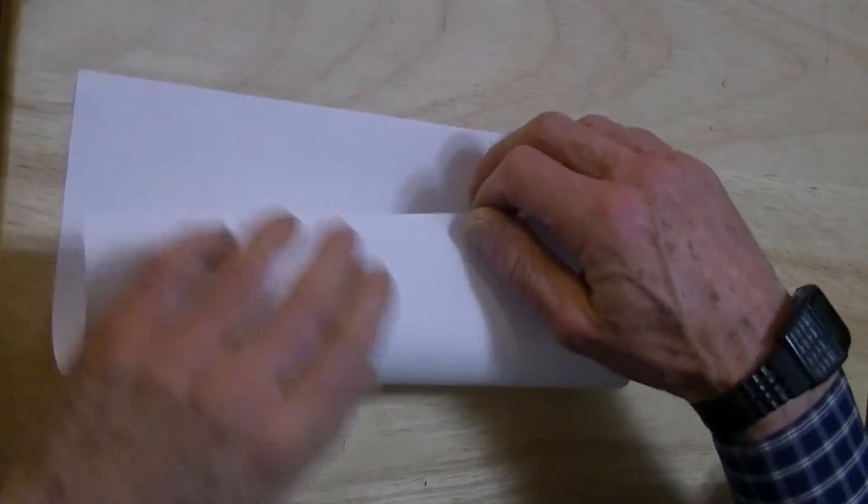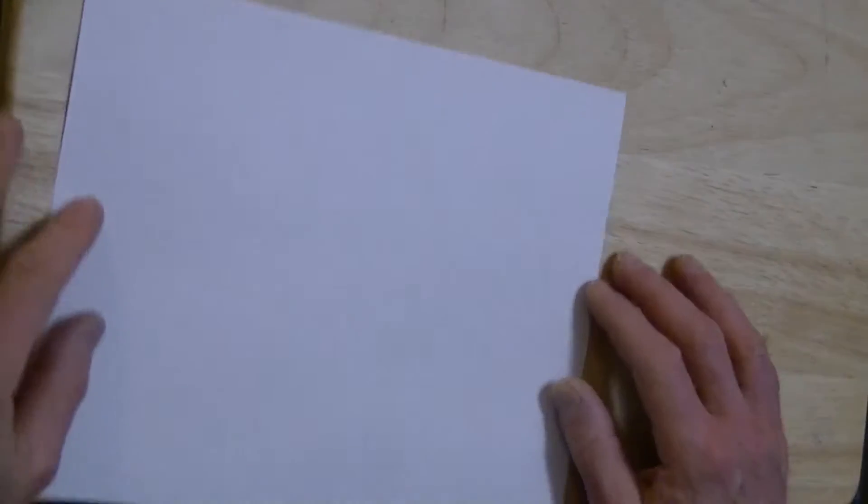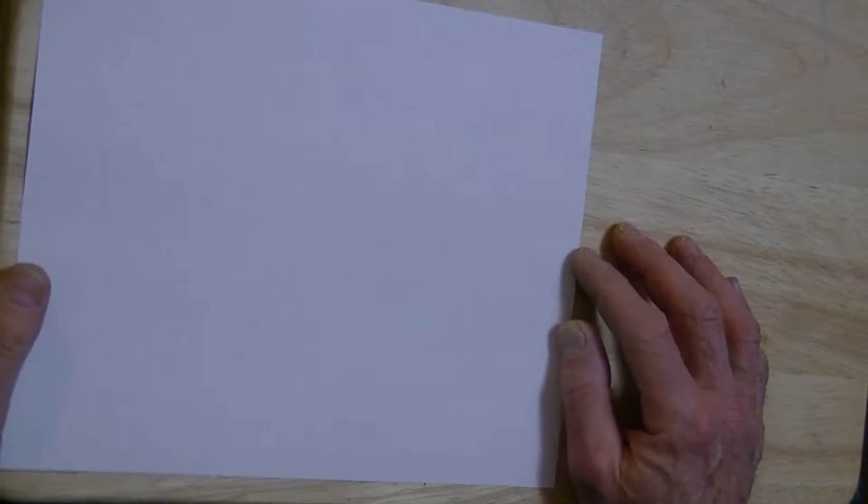This is the third in my series of paper Klein bottle videos. I figured out a way to make them 3D. And to do that, it's nice to have them get a little bigger, so this is a full 8.5x11 sheet of paper.